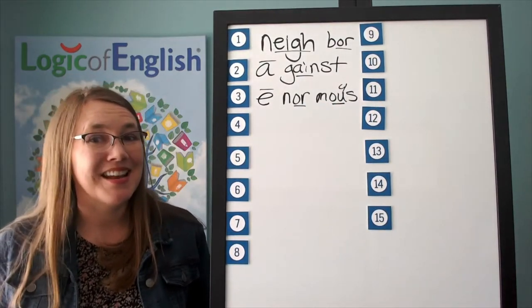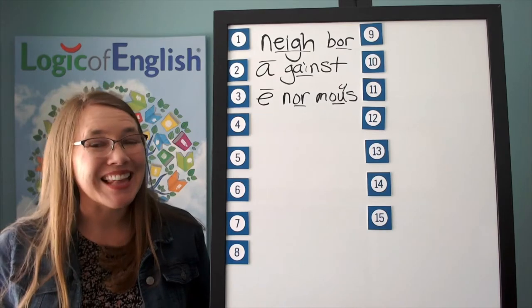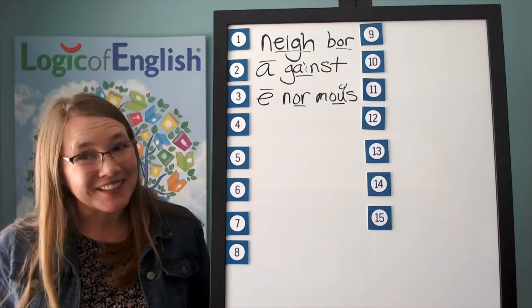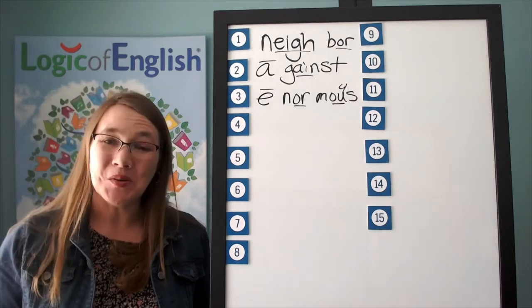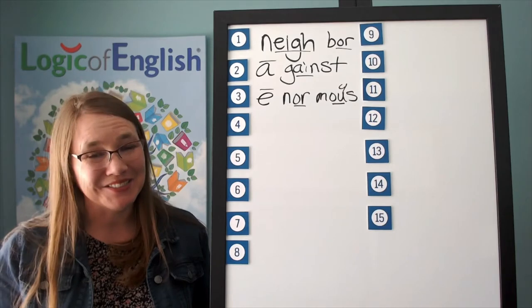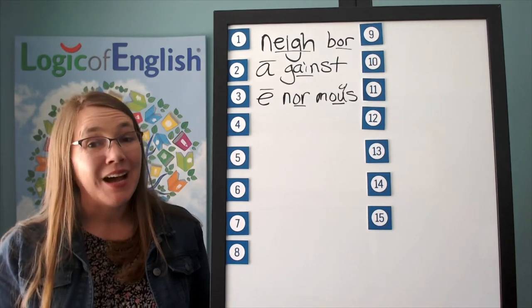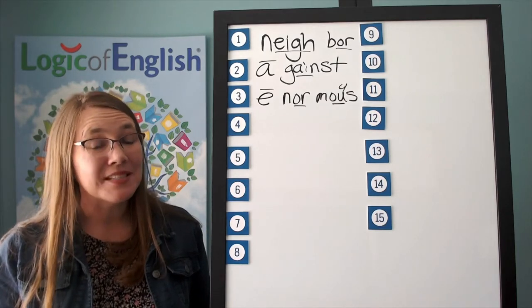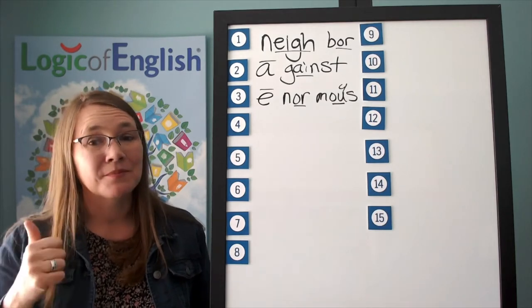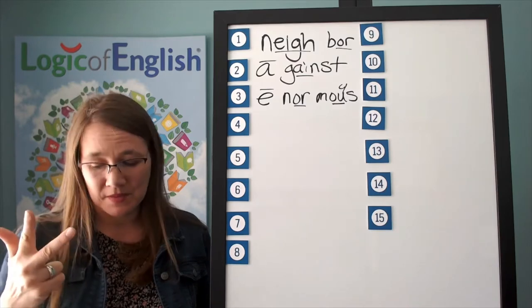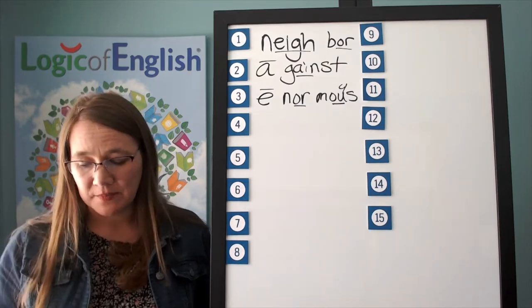The next word is elephant. The elephant is enormous. Go ahead and say elephant. How many syllables in elephant? Three.